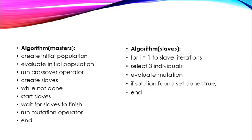First, create an initial population. Evolve the initial population and run the crossover operator. Create slaves. While not done, start slaves and wait for them to finish, then run the mutation operator. For the slave algorithm: in a loop, select three individuals, evaluate the mutation, and if a solution is found, set done to true and end.